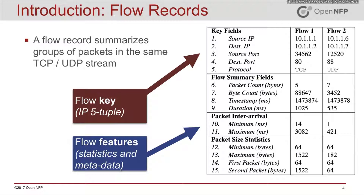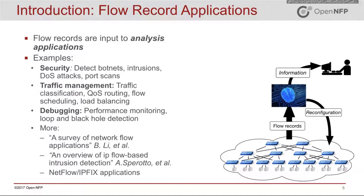This table shows some examples of statistics that some applications may use, but in general there can be many different features depending on the needs of the application. Ultimately, flow records are basically input to analysis applications. There's some monitoring infrastructure on your network that produces these flow records based on the traffic and the links that you're monitoring, and it provides these flow records to analysis applications that analyze them for things like security, traffic management, or debugging.